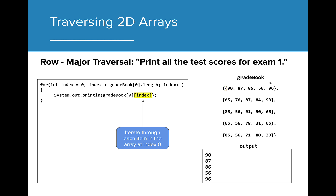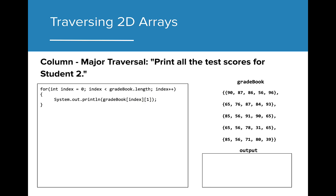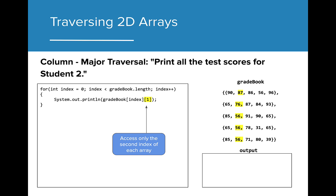The end result will look as such: each value from the first array will be printed on a separate line, and the program will stop executing. For Column Major traversal, the algorithm looks very similar. Instead of traversing the length of a single array, we need to traverse the length of the entire gradebook. This ensures that each array within the 2D array gets searched. Additionally, the constant in the print statement swaps positions.